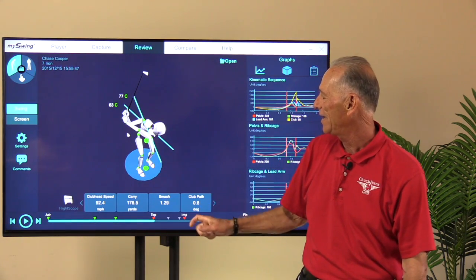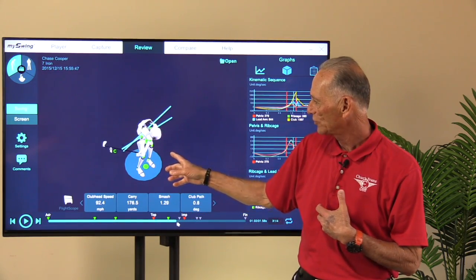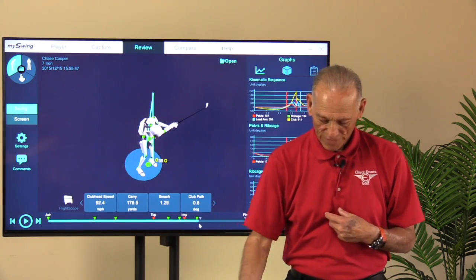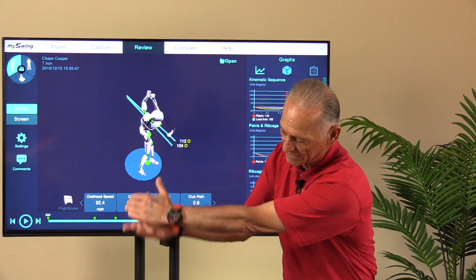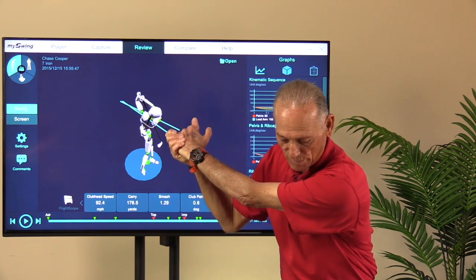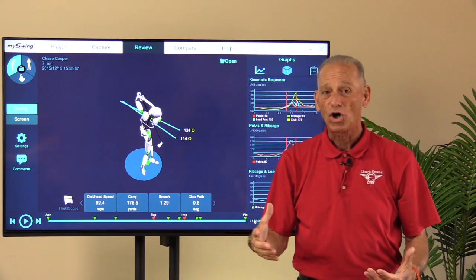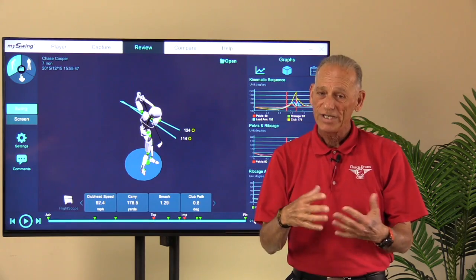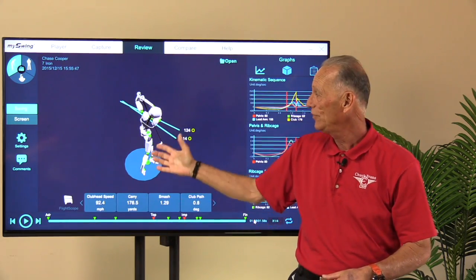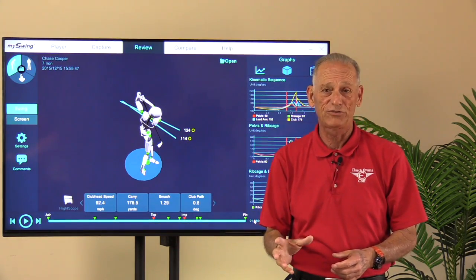As they start coming down, again, we can see how the ribcage can move without the shoulders moving sometimes. So that would look similar to this. When I got to the top, my ribcage is moving right now, along with my pelvis, but my shoulders aren't moving. So again, hard to see in 2D. You can see it if you've used 3D enough, you can see a little bit of it. But the 3D is going to give you the exact picture.